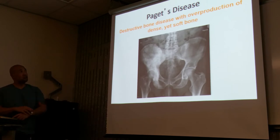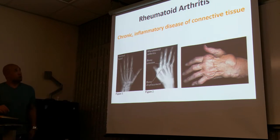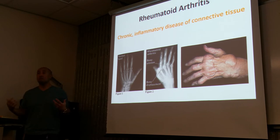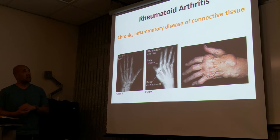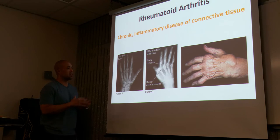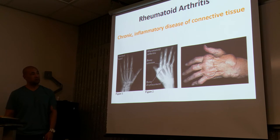Paget's disease is a destructive bone disease with overproduction of dense yet soft bone. It usually happens with men at a certain age. Rheumatoid arthritis is an autoimmune disorder — your body attacks its own body. It's chronic and inflammatory, it affects the connective tissue of the joints, and is very debilitating. It causes changes in the anatomy and deformity of the extremities due to tugging and pulling.